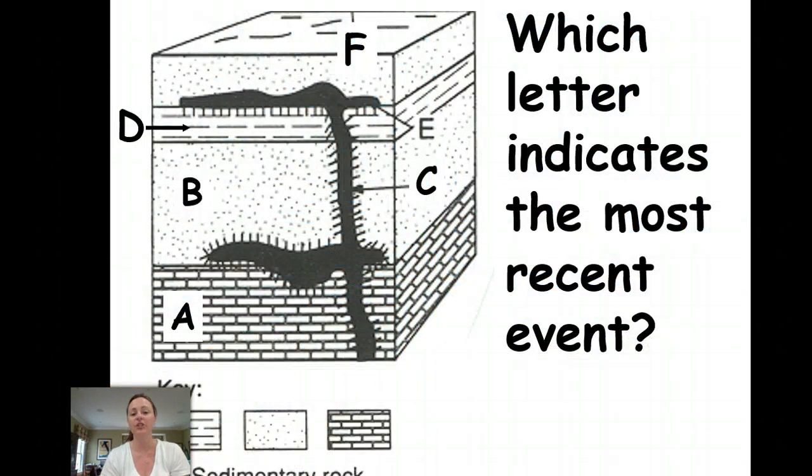Let's look at your diagram on your notes. We have an outcrop, this is known as exposed rock. So we ask you which letter indicates the most recent event. So you have to look carefully and determine which must have come first, second, third, and so on.